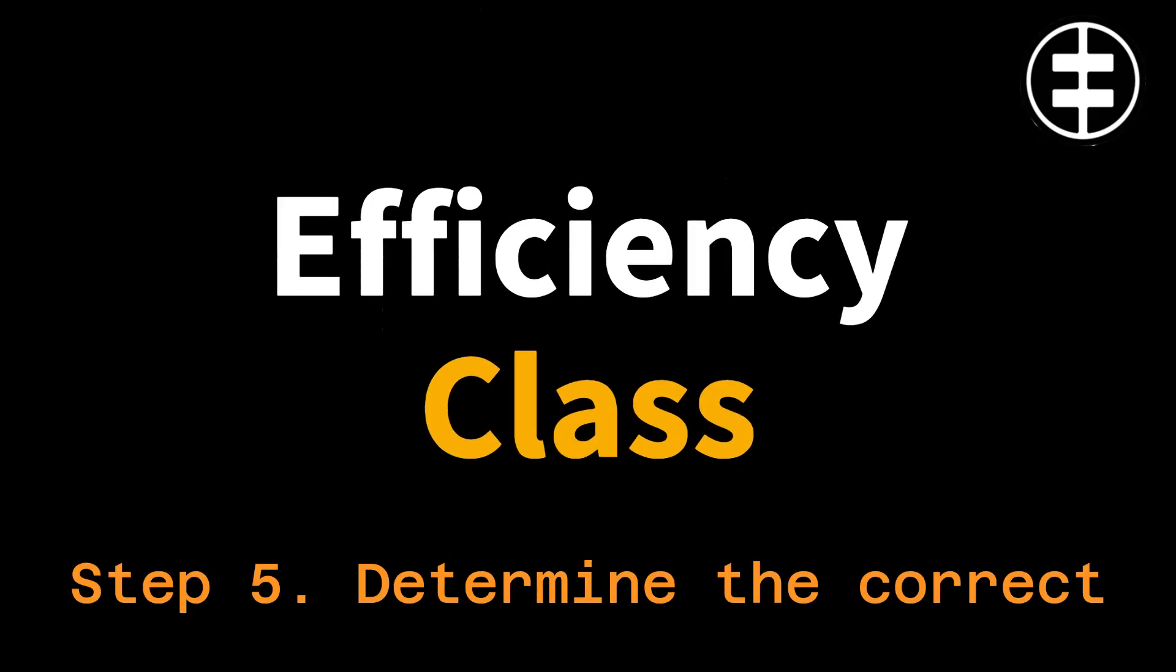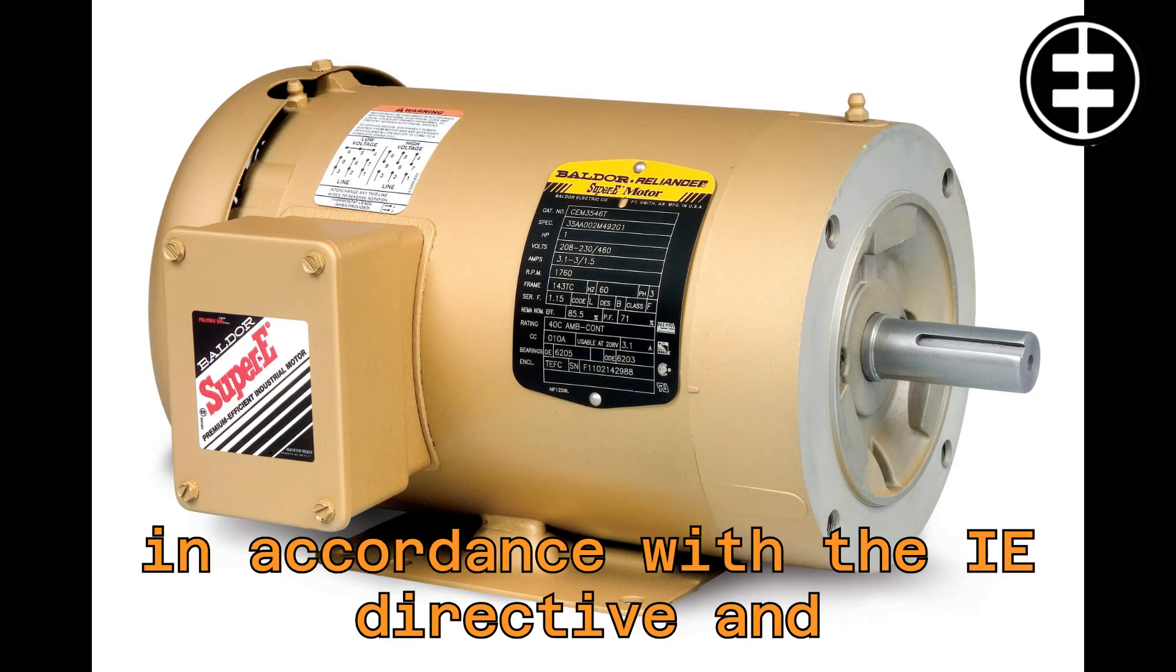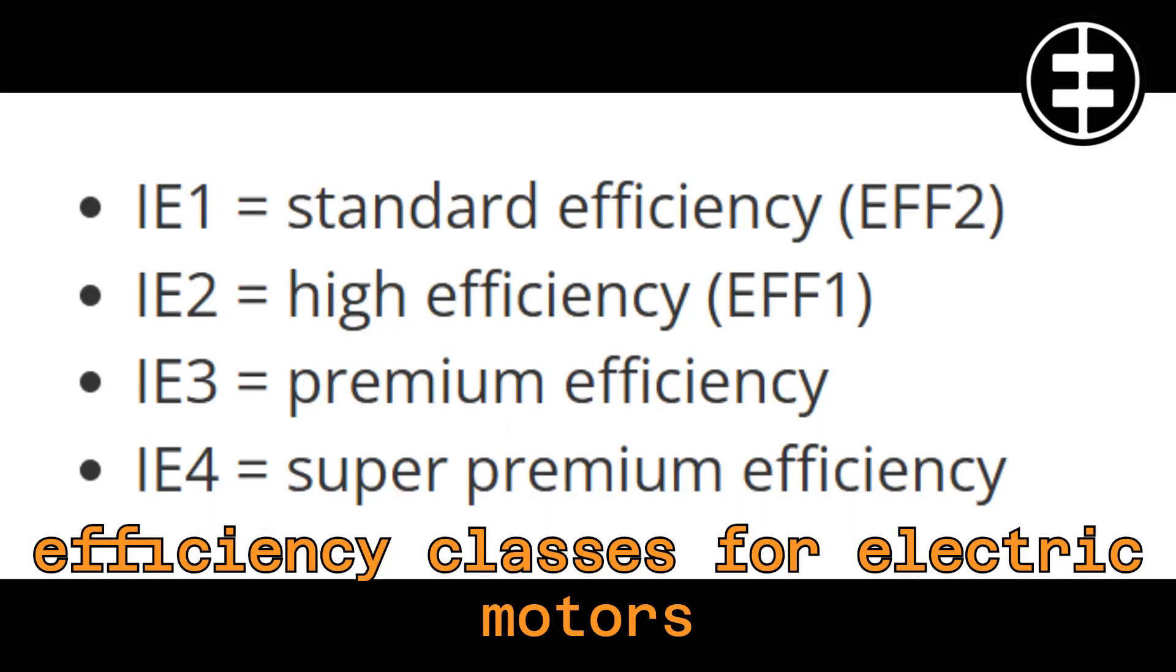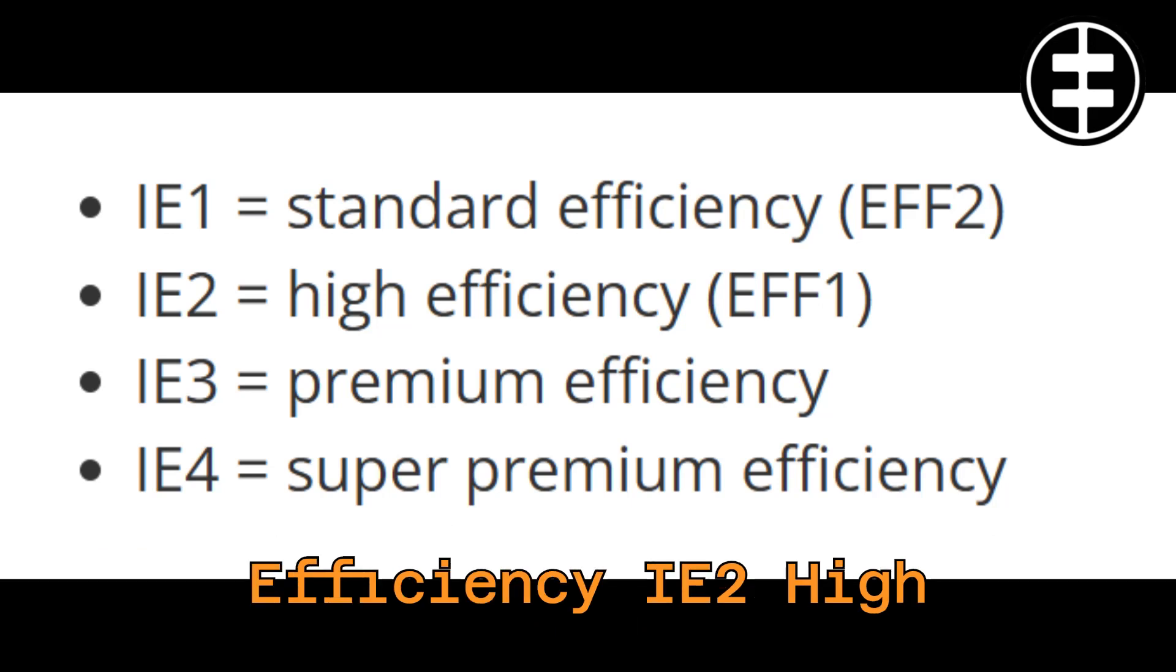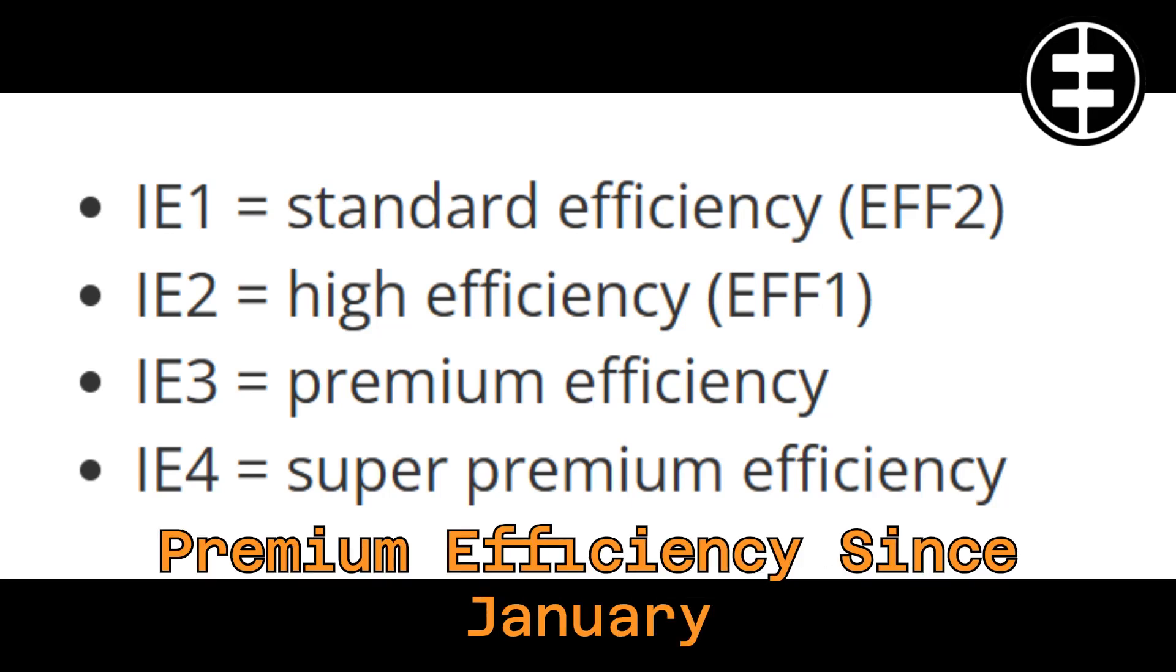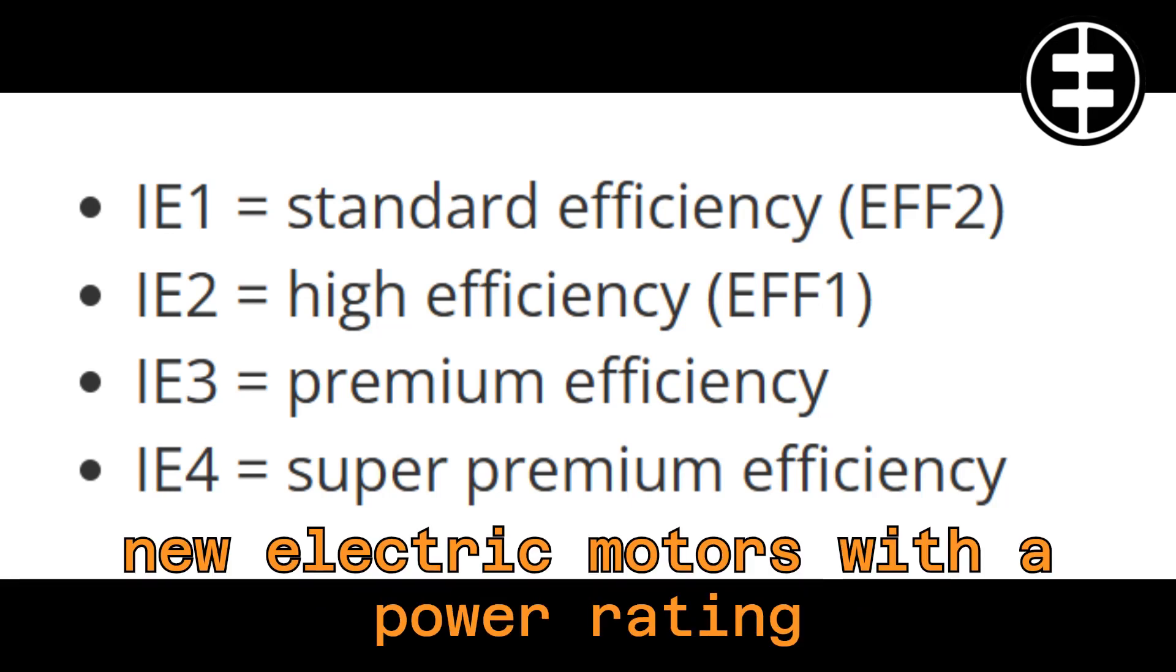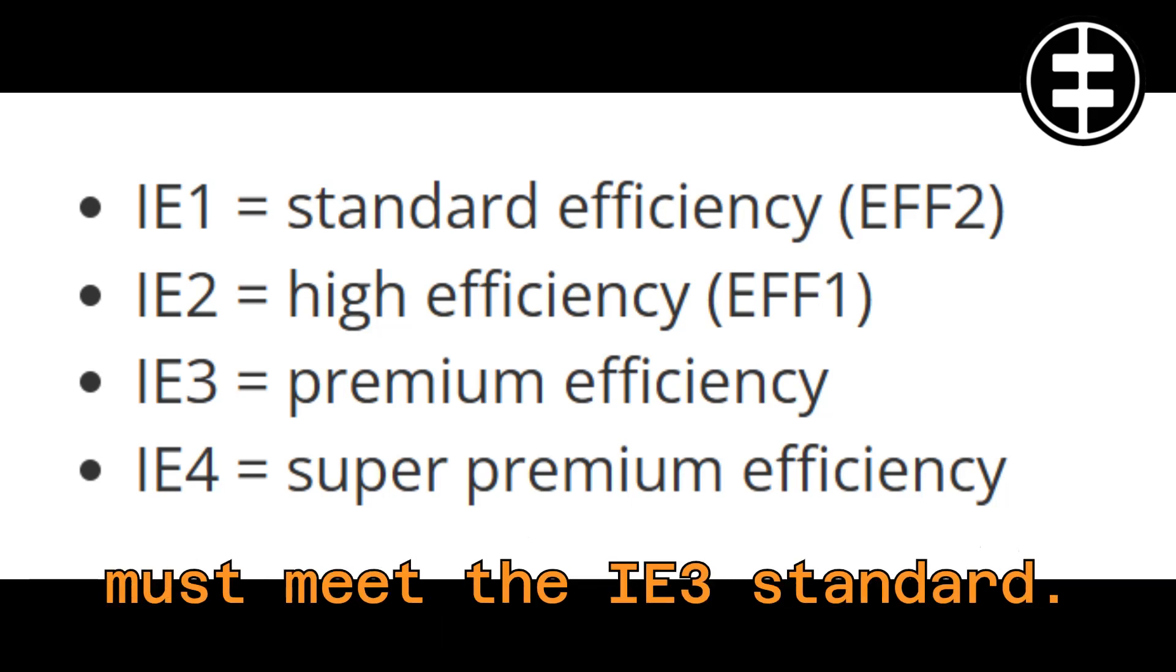Step 5. Determine the correct efficiency class. From June 16, 2011, most motors on the market must be marked in accordance with the IE directive and classified with an efficiency class. The efficiency classes for electric motors are IE1 Standard Efficiency, IE2 High Efficiency, IE3 Premium Efficiency, IE4 Super Premium Efficiency. Since January 1, 2017, all new electric motors with a power rating of 0.75 kW or above must meet the IE3 standard.